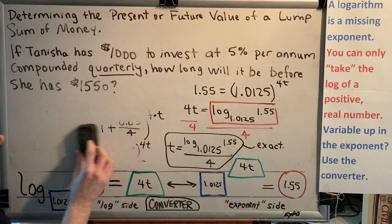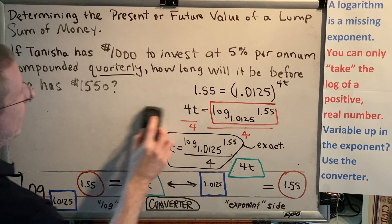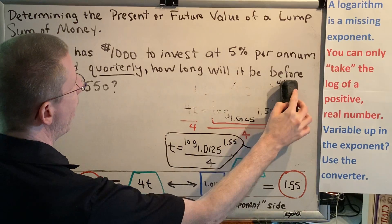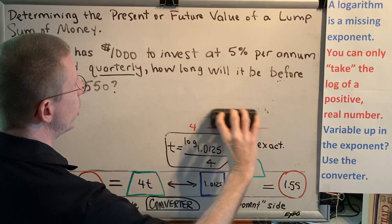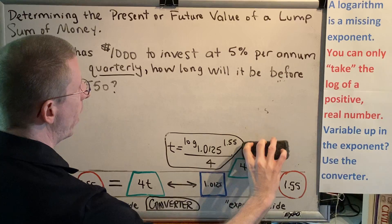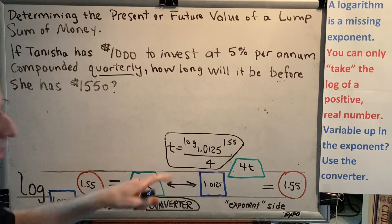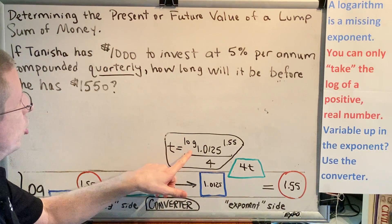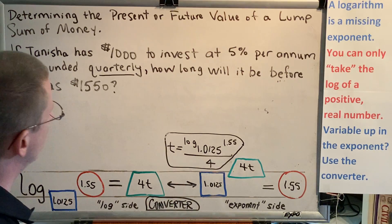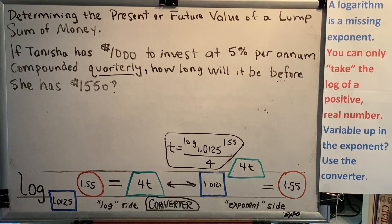The first thing you might recognize is that many calculators do not have the ability to let you choose the log base. And therefore the only way you can get a decimal approximation is if you were to use the change of base formula on this log with base of 1.0125.